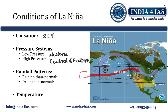Regarding rainfall patterns during La Nina: rainfall is above normal in southeastern Africa, northern Brazil, and northern Australia. It is drier than normal along the west coast of tropical South America — that is the Peru and Ecuador region — the Gulf Coast of the United States, and the Pampas regions of southern South America. Temperature increases are observed in the western Pacific, Indian Ocean, and off the coast of Somalia.